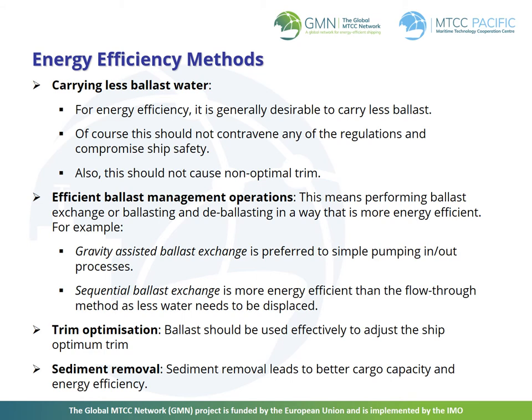There are numerous energy efficiency methods that can be used to optimize ballast water on board the vessel. These include carrying less ballast water, which should not contravene any regulations or compromise ship safety, and should not cause non-optimal trim. Having more efficient ballast management operations means performing ballast exchange or ballasting and de-ballasting in a more energy efficient way. Gravity-assisted ballast exchange is preferred to simple pumping in and out processes. Sequential ballast exchange is more energy efficient than the flow-through method as less water needs to be displaced. Adjusting to the ship's optimum trim by using ballast effectively and removal of sediments will lead to better cargo capacity and energy efficiency.